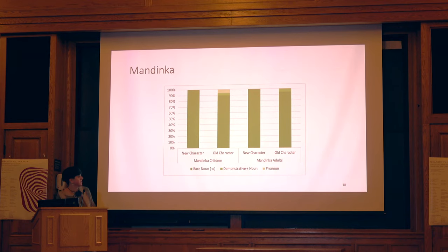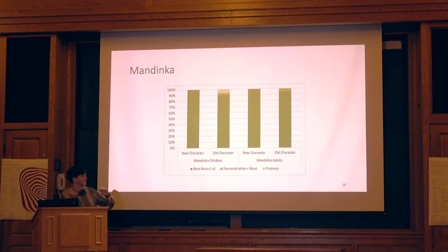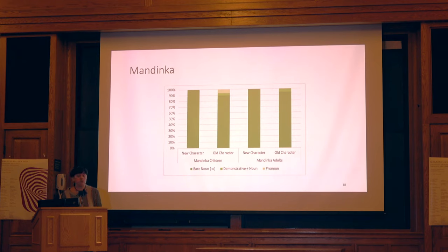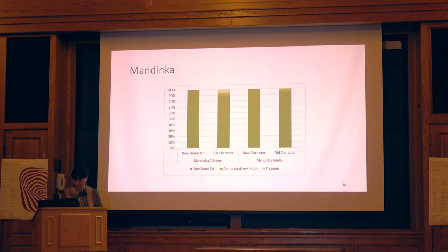In Mandinka, we monitored the three most frequent referential forms: the bare noun with the lexical marker 'O', the demonstrative used for old characters like a definite, and pronouns. And we can see very little variability — most speakers, both adults and kids, use just the bare noun, both for new characters and old characters.